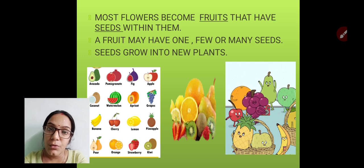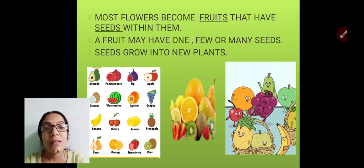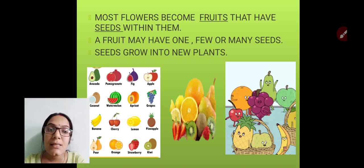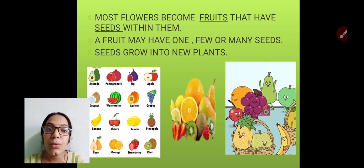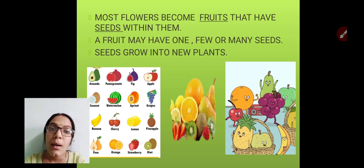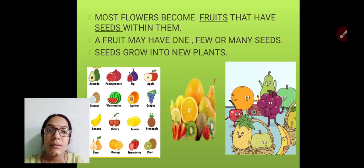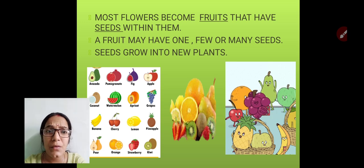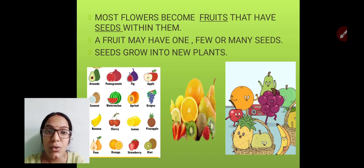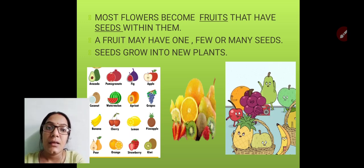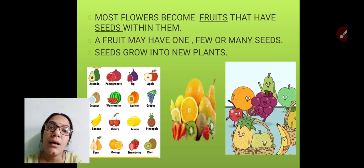Most flowers become fruits that have seeds within them. A fruit may have one, few, or many seeds. For example, avocado and mango have only one seed. Watermelon, pomegranate, and kiwi have a lot of seeds. Apple and orange have few seeds. Seeds grow into new plants — that is the function of the seed.